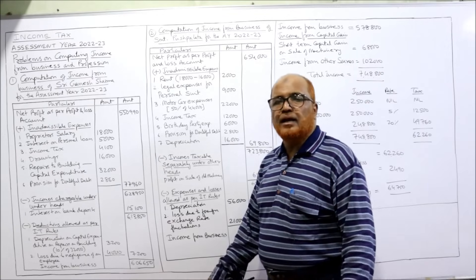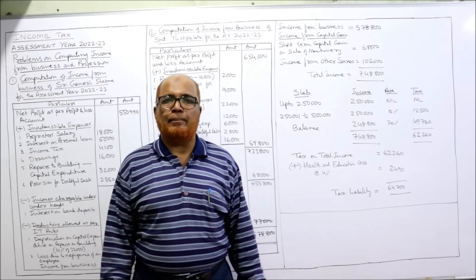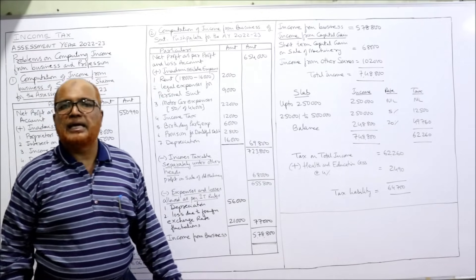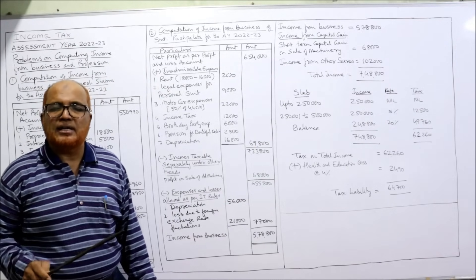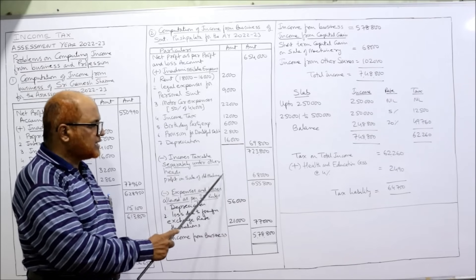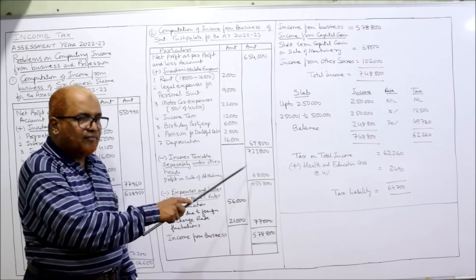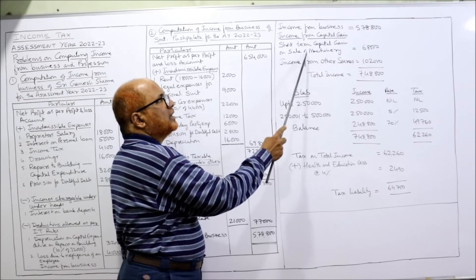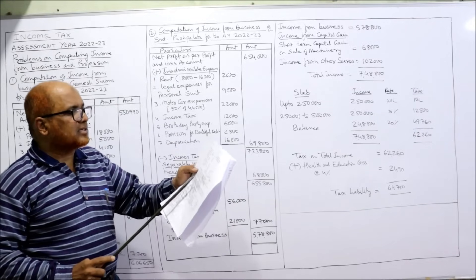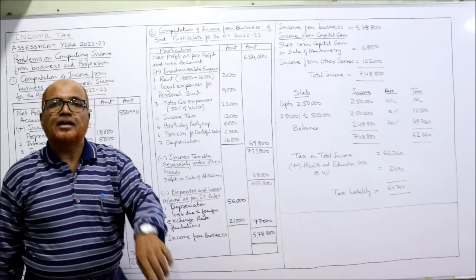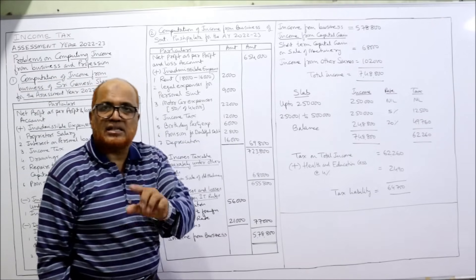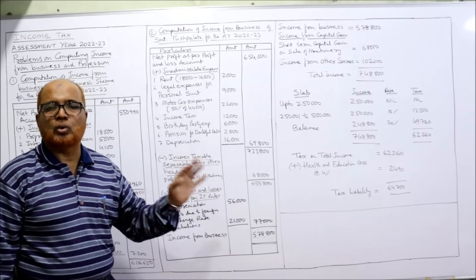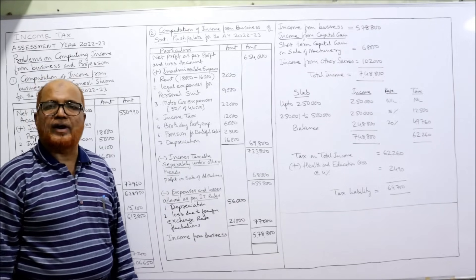Now we calculate the tax liability. Income from business: 5,78,800. Income from capital gains: there is a short-term capital gain on sale of machinery — 68,000 — which was deducted from business income because it is taxable under income from capital gains. Income from other sources: 1,02,000 — given on the last line of the problem. Total income: 5,78,800 + 68,000 + 1,02,000 = 7,48,800.